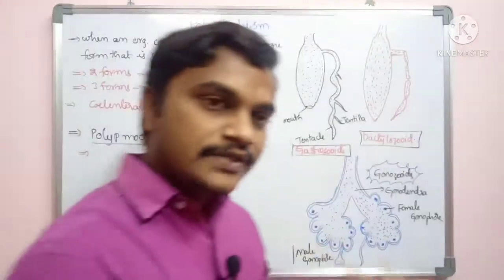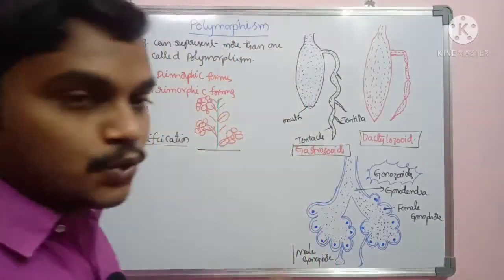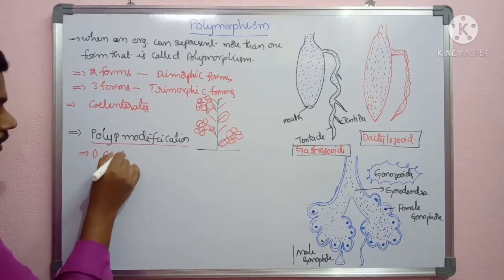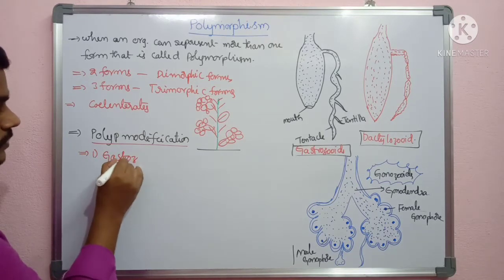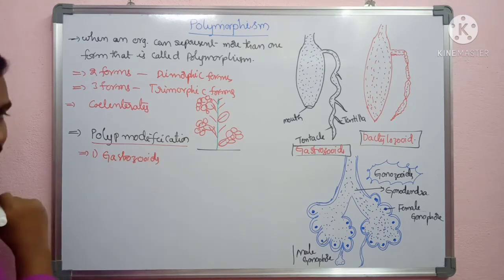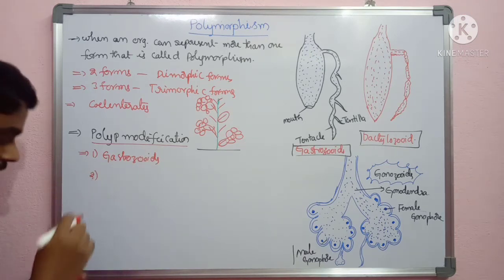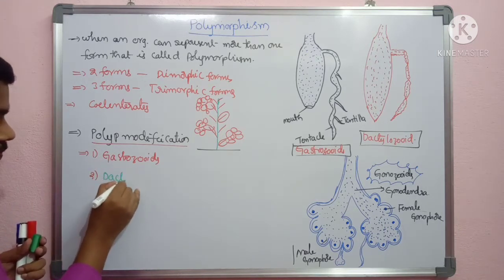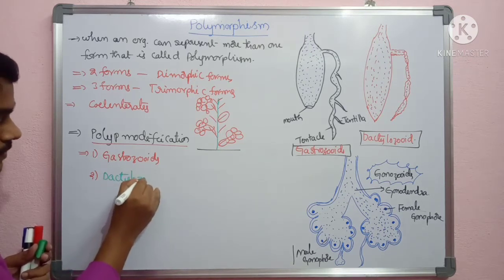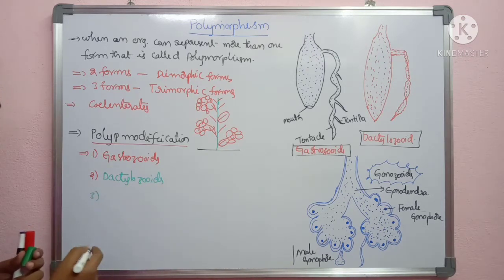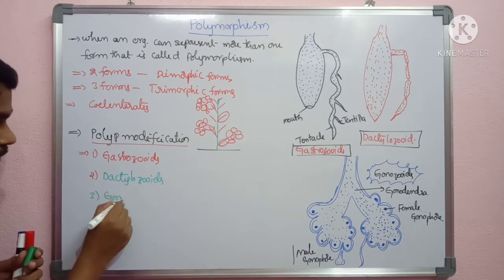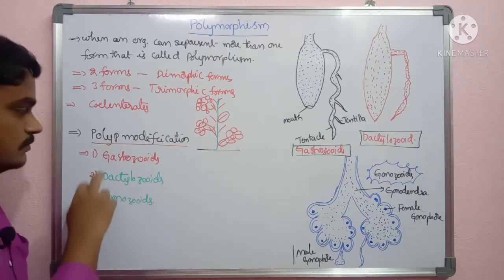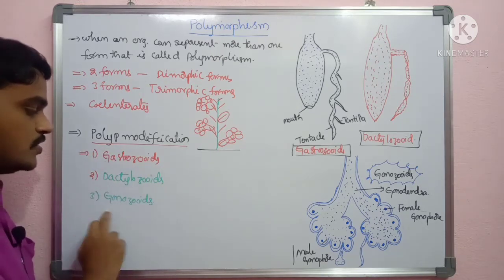A single polyp will modify into different zooids. Those zooids are described here. First, that is gastrozooids. Second, that is dactylozooids. Third form, gonozooids. So polyp modifications are: gastrozooids, dactylozooids, and gonozooids. Now we will move into medusa forms.